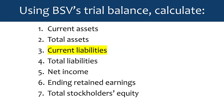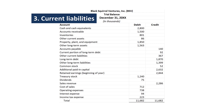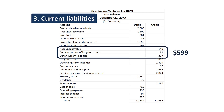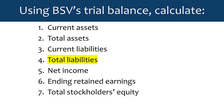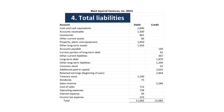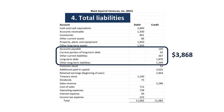We can calculate current liabilities. Looking through our list, we see accounts payable, current portion of long-term debt, and other current liabilities, so we add those. We can also get total liabilities — you see them all listed in order, so we just pick our liability accounts and add those up to get our total liabilities.